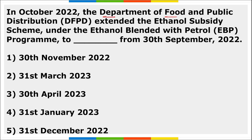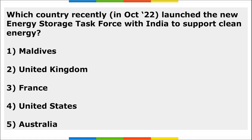The first question: the Department of Food and Public Distribution has extended the ethanol subsidy scheme under the Ethanol Blended with Petrol program. It was extended from 30th September 2022 to 31st March 2023.